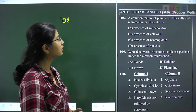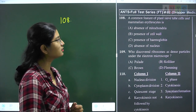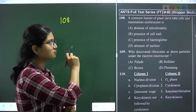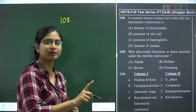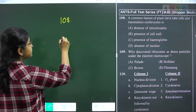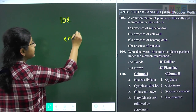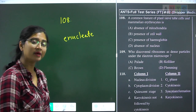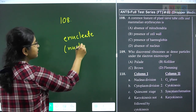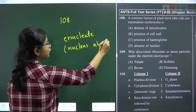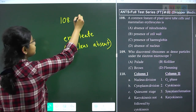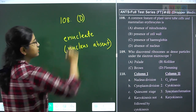Question 108: a common feature of plant sieve tube cells and mammalian erythrocytes is? Both sieve tube cells and mammalian erythrocytes are living cells that are integral parts of the organism, yet both are enucleate — meaning the nucleus is absent in their mature state. Question 108 answer is option D, absence of nucleus.